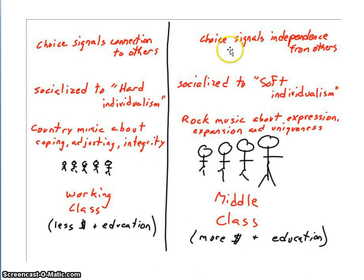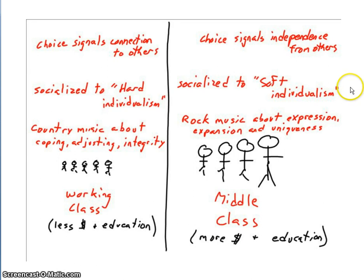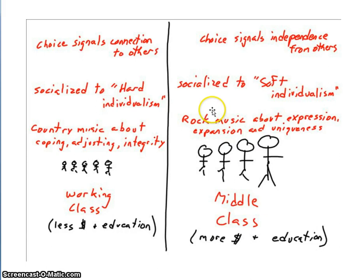For the middle class, choice signals independence from others. They are socialized to soft individualism — there's a world out there waiting to be conquered, and you can pursue whatever your passion dictates. You'll be equipped to meet the world and thrive in it. Rock music reflects these values: expression, expansion, and uniqueness. Again, the genre and its lyrics fit with these socializing differences and worldview differences.